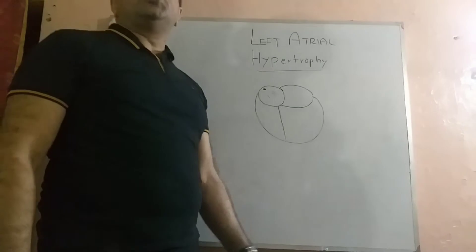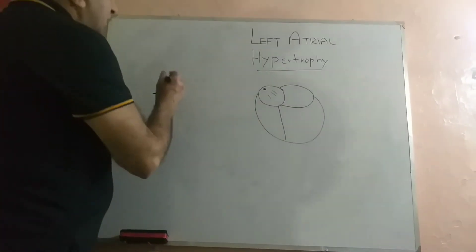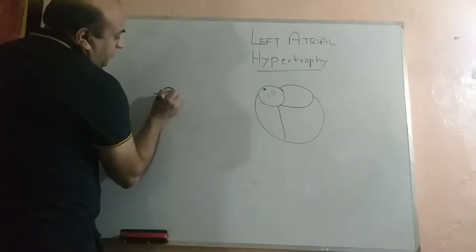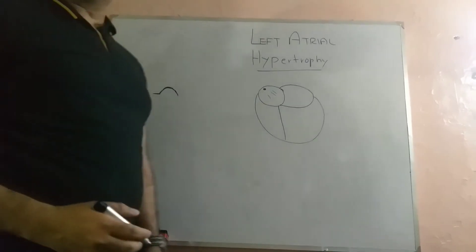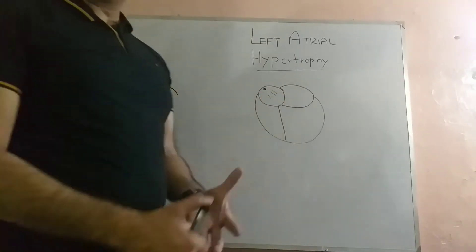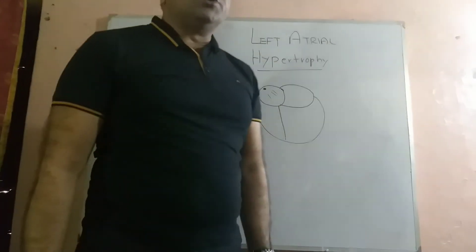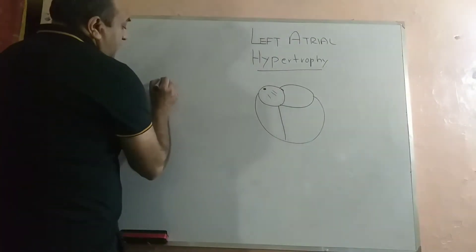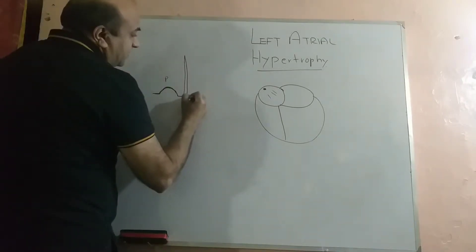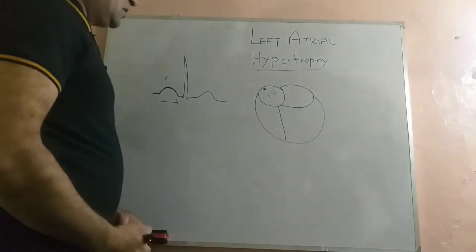This wave of depolarization then enters the left atrium and generates the second part of the P wave on the ECG paper. We see a nice smooth morphology of the P wave because there is no discrepancy between both atrial depolarizations. This is the P wave, followed by a small Q, QRS, and T.